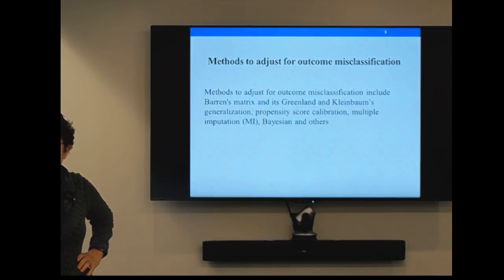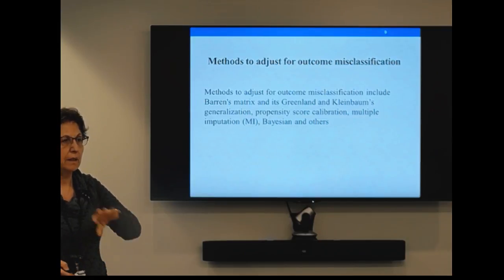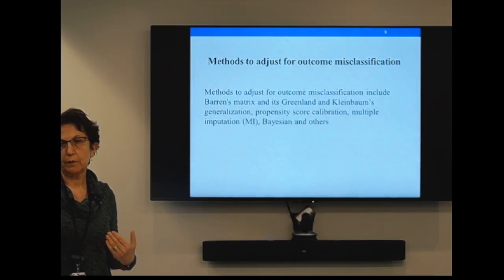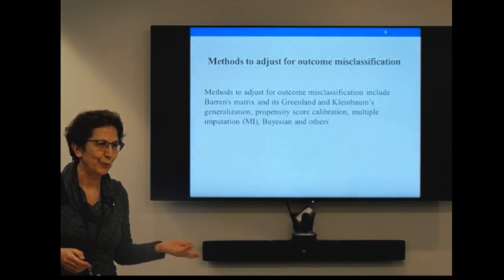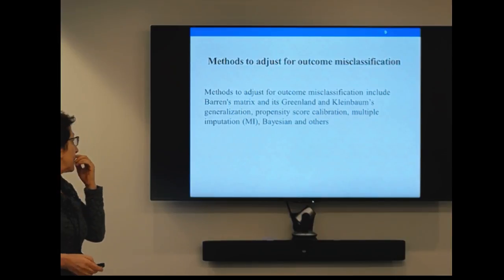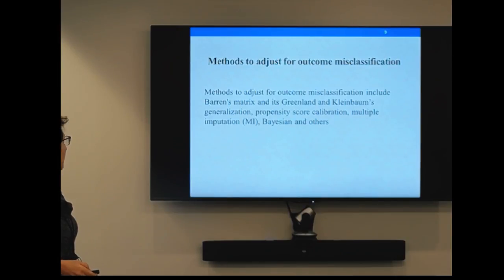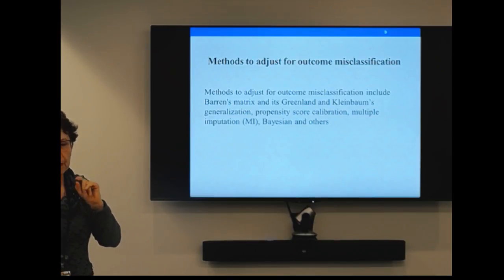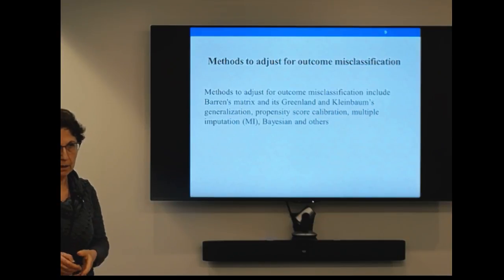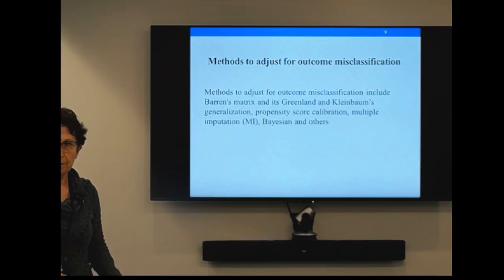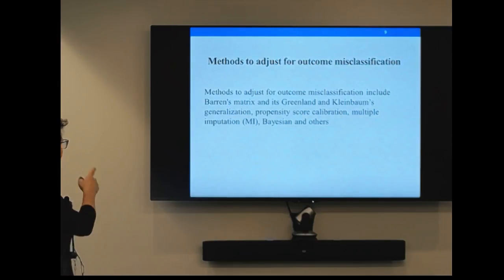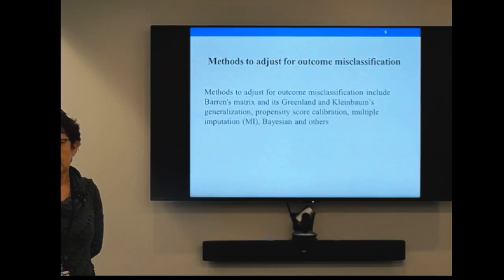So now we have an outcome — VTE — that is misclassified and largely so. The sensitivity is bad, and the number of false positives is about the same as the number of true positives. There are methods to adjust for outcome misclassification. Exposure misclassification has been studied a lot. Outcome misclassification is less studied because it's more cumbersome. Today we'll look at the multiple imputation method and the Bayesian method.